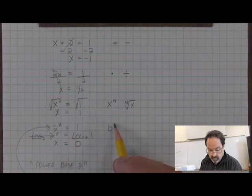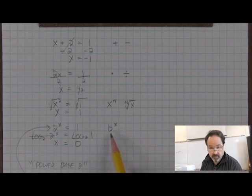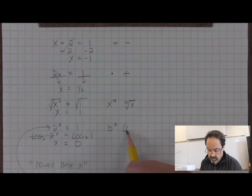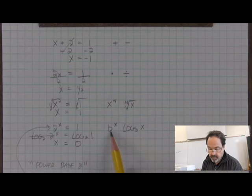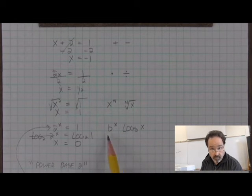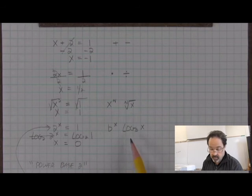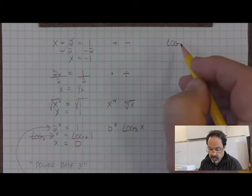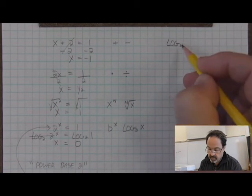When our power is exponential, which means that the variable is in the exponent position, the inverse operation is the log of the same base. These are operations that undo each other. Let's give another example.